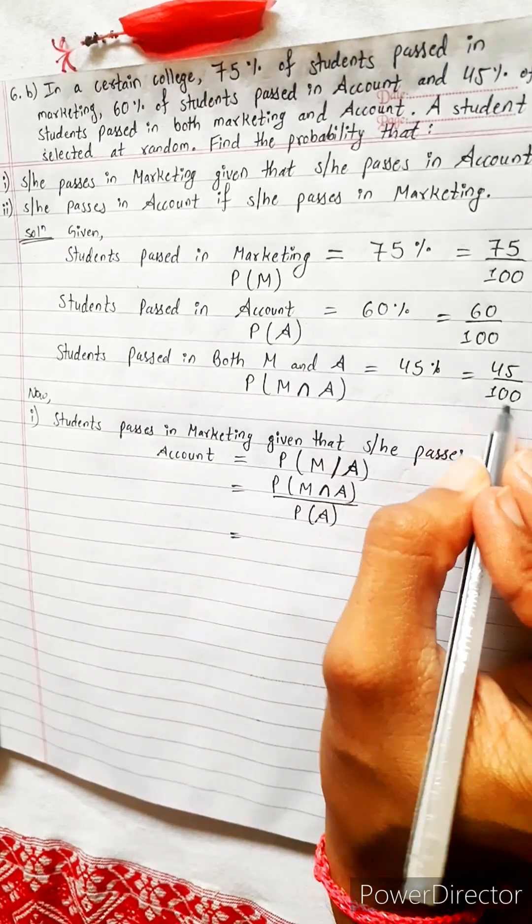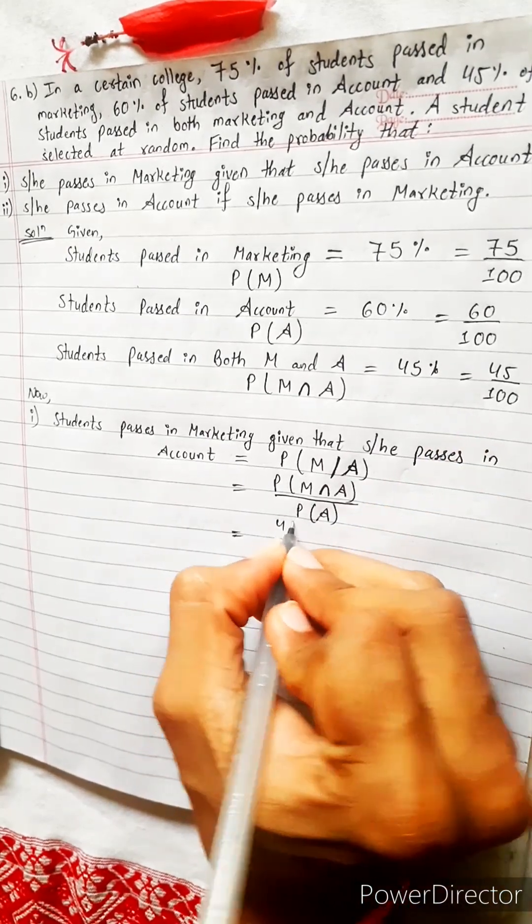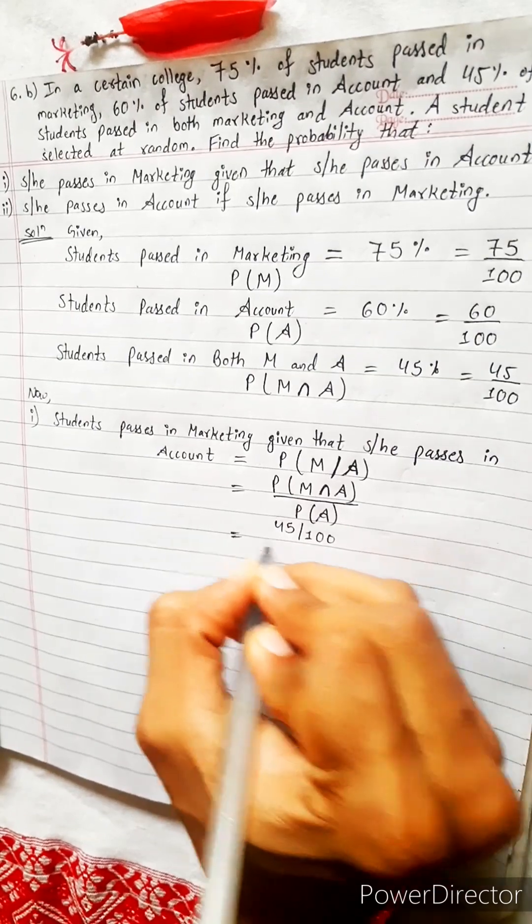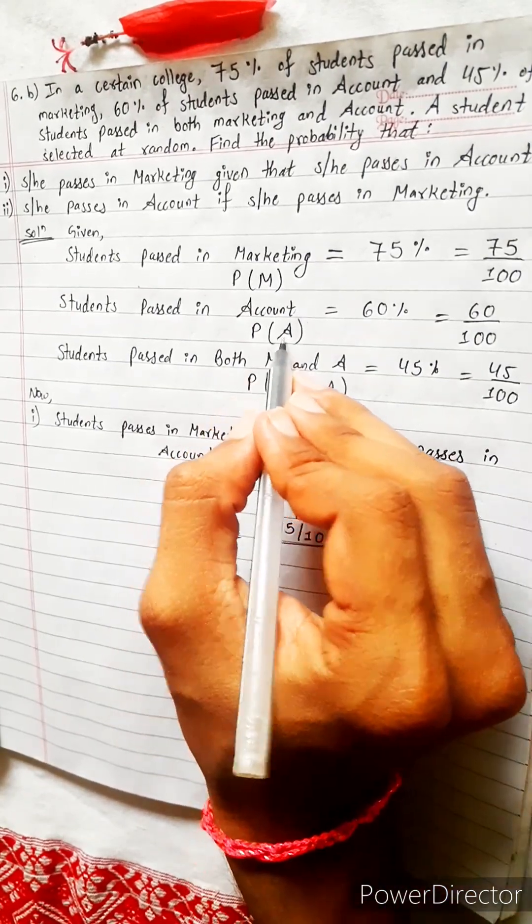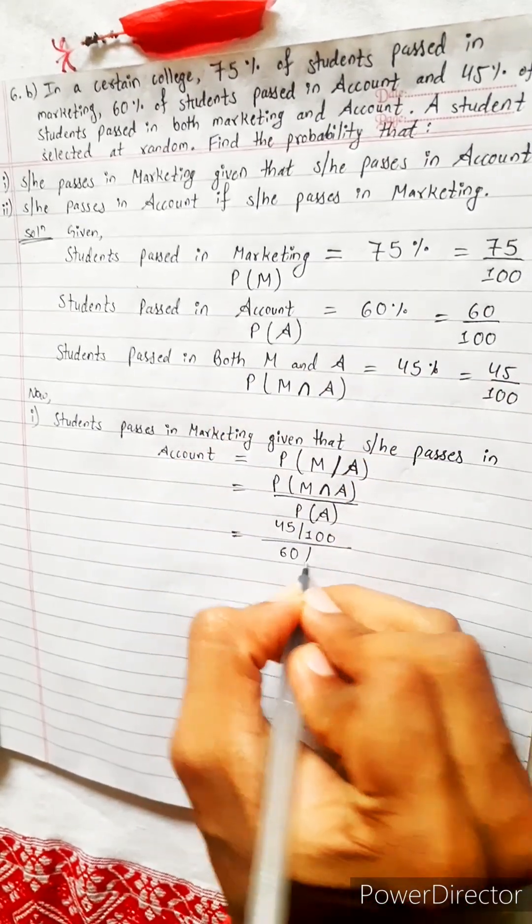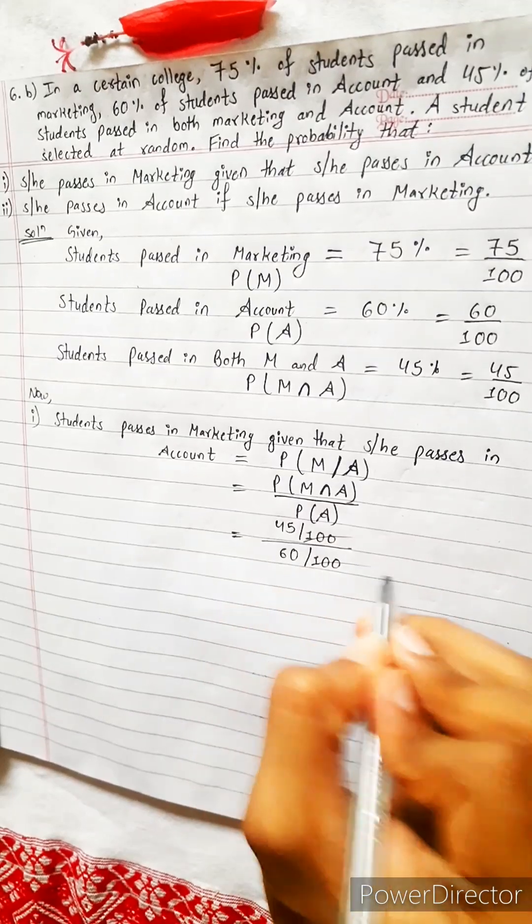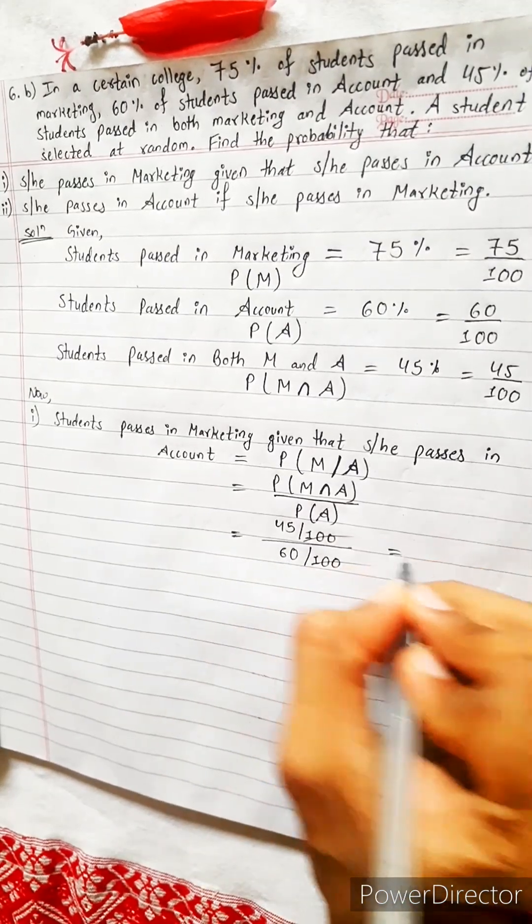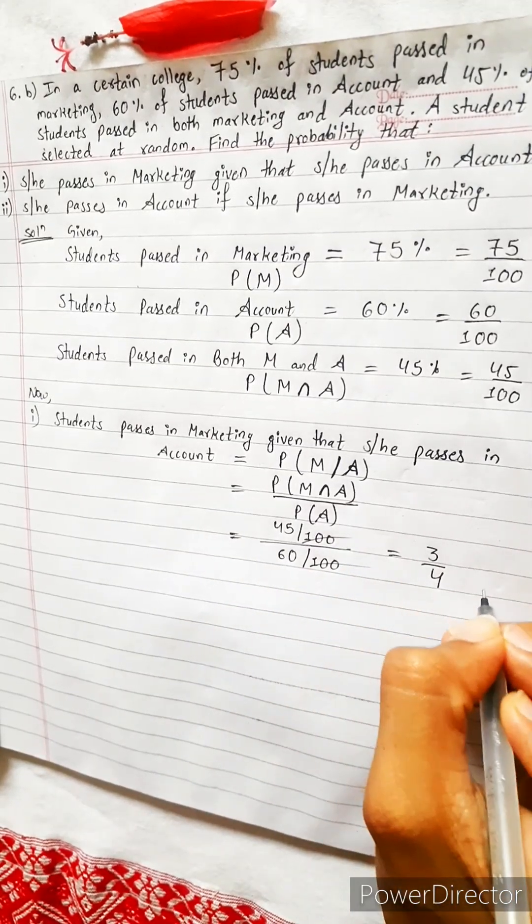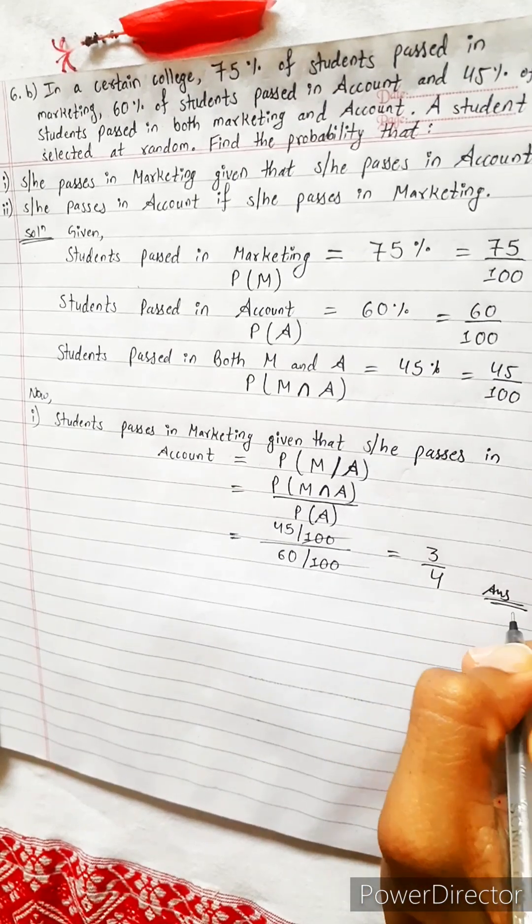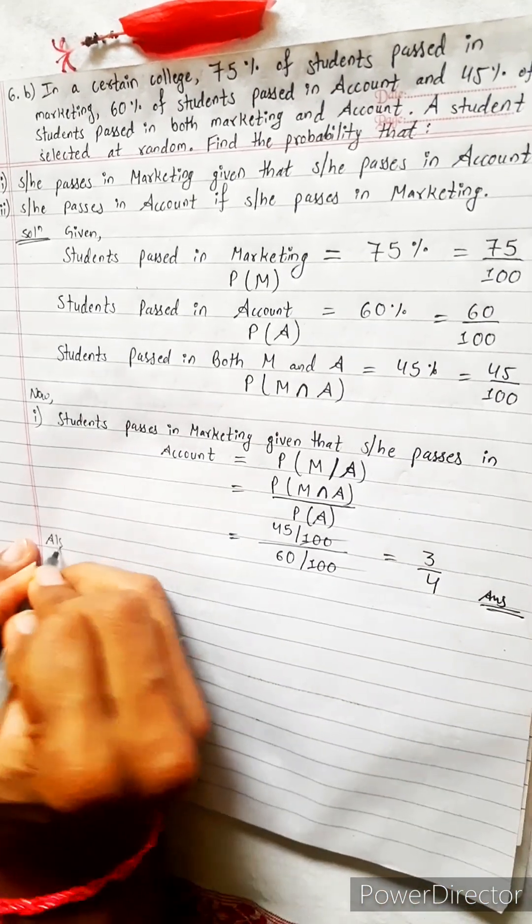Now this is 45 by 100, and A means probability of account, 60 by 100. Now this 100 cancels, and 45 by 60 is how much? This is 3 by 4 says my calculator. So leave it.